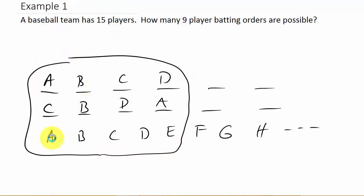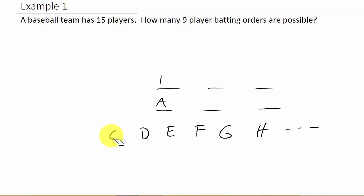But look at this. Let's say I choose C, B, D, A. We got other players, 15 of them, but these are the ones that I chose. Notice I chose A, B, C, and D both times, but first I chose A then B then C then D, but here I chose C, B, D, and A. I chose them in a different order and these are different batting orders.